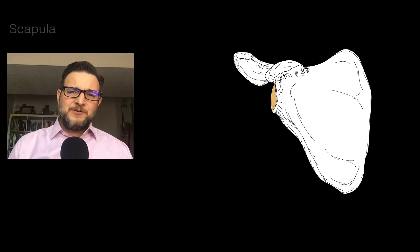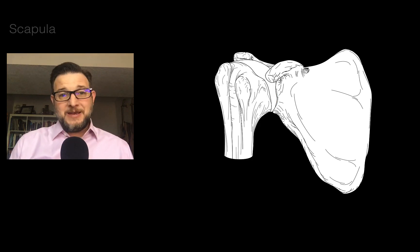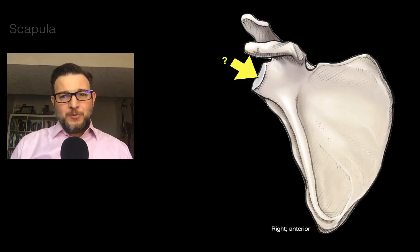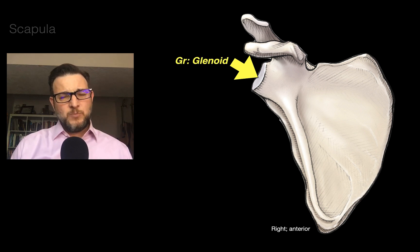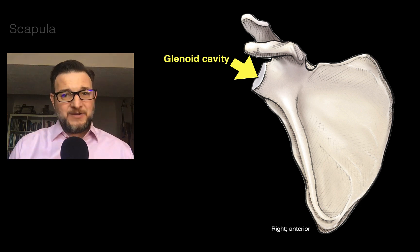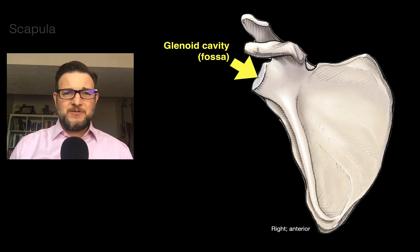In this anterior view of the scapula, there's a socket on the side that articulates with the ball — the head of the humerus — making a ball and socket joint. Anatomists asked: what do we call this shallow, smooth structure on the side of the scapula? They said, why not call it the socket? In Greek, socket is 'glenoid,' so this is called the glenoid cavity. Because it's not very deep and more shallow, it's also called the glenoid fossa — both terms are used.